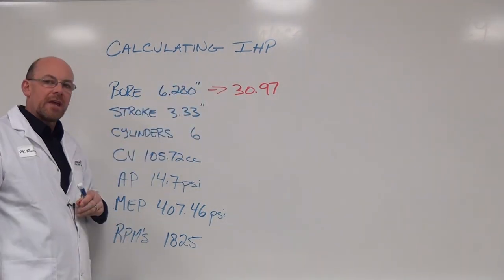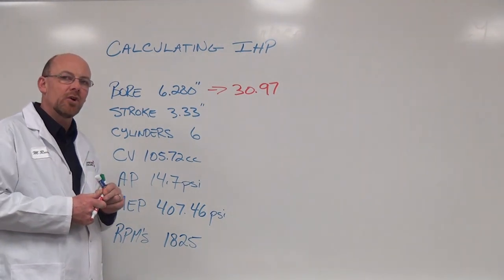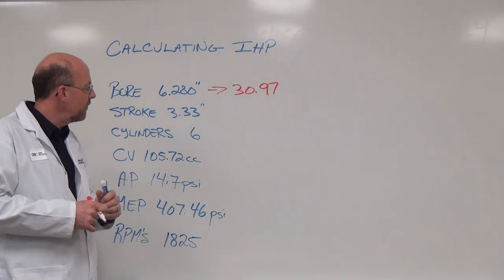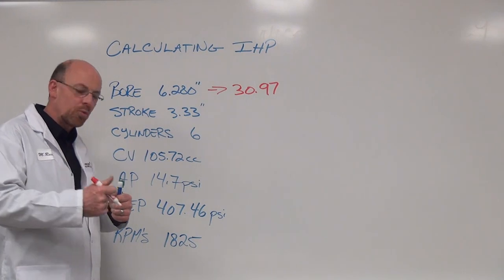The stroke now, we have to change the stroke in the indicated horsepower formula because we need to take a look at the length in stroke feet. So in order to get the length in stroke feet, we divide by 12.